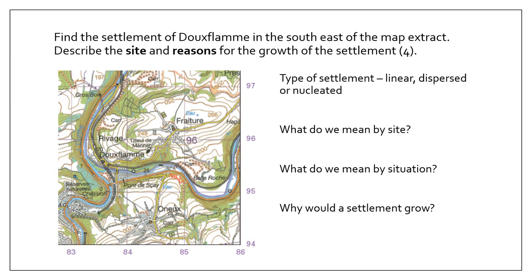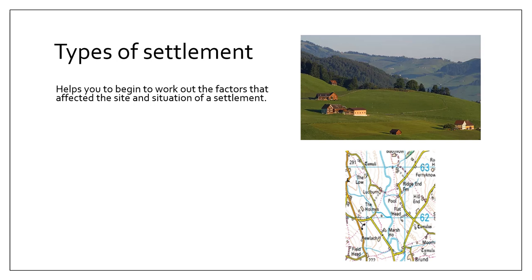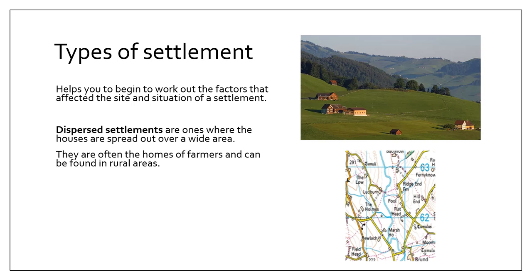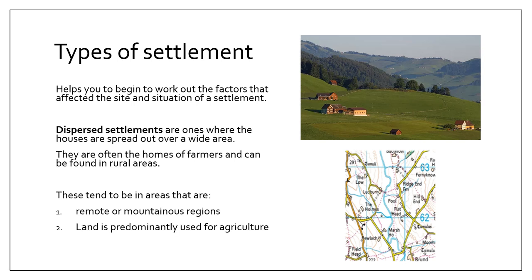The final question may ask you to describe the site and reasons for growth of a particular settlement. It's important to know the different types of settlement. Dispersed settlements have houses spread over a wide area — typically farmers in rural areas, found in remote or mountainous regions with land predominantly used for agriculture and limited job opportunities, which explains why they haven't grown larger. Linear settlements are built along geographical features such as a lake shore, a river, or a road — the road often came before the settlement, built to use transport links.